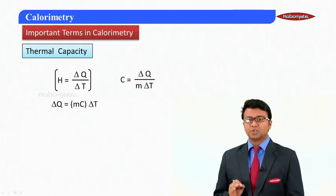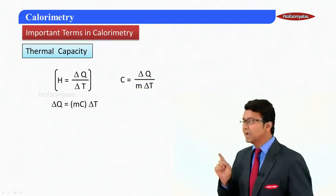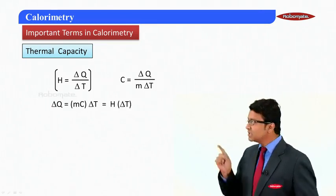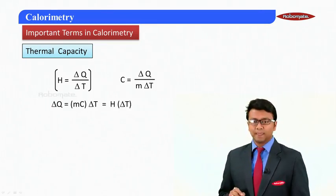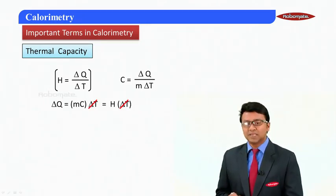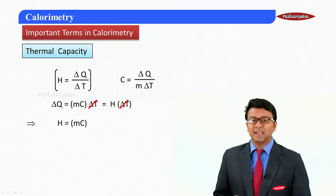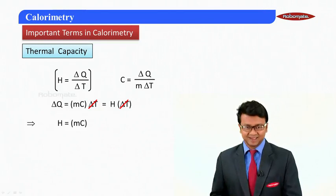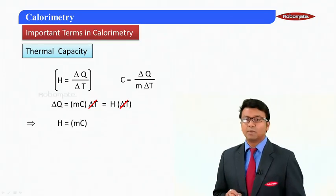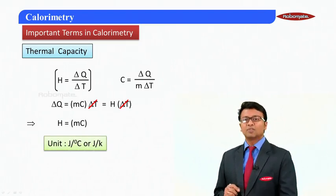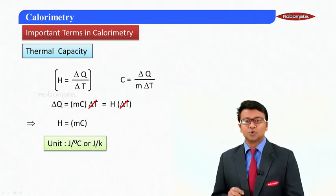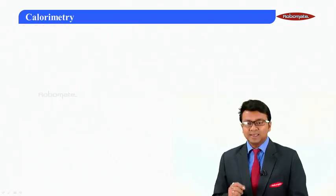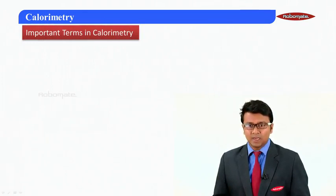Using the relation ΔQ = mcΔT, this can also be written as H·ΔT. Cancelling ΔT from both sides, we get thermal capacity H = mc, the product of mass and specific heat capacity. This is a very important relation to remember. The unit of thermal capacity is joules per degree centigrade, or joules per Kelvin.